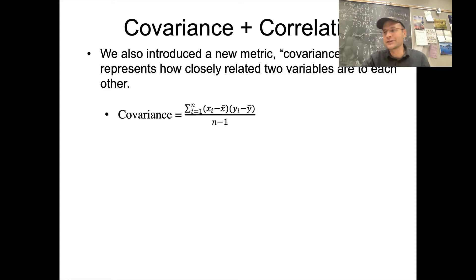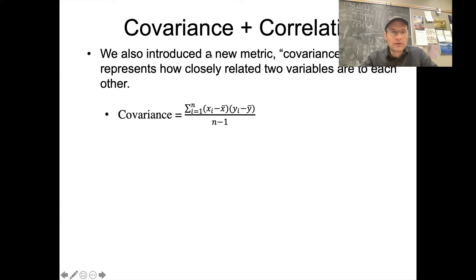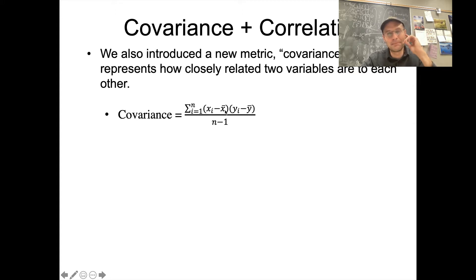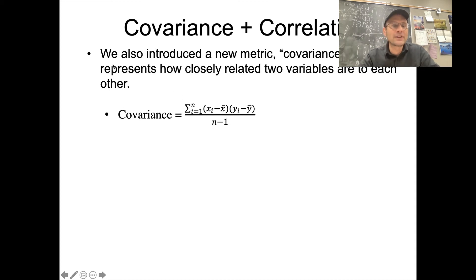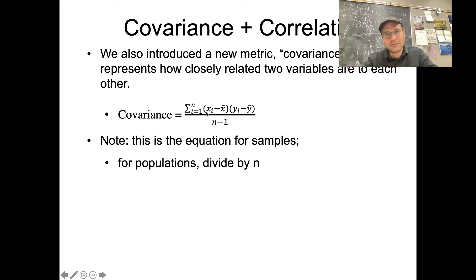We also talked about covariance and correlation. In that discussion we introduced a new metric — covariance — that represents how closely related two variables are to each other. The equation for covariance looks very similar to the equation for variance, except that for variance we have a sum of squared deviations: the individual x data points minus the mean of x, squared, summed, and divided by the degrees of freedom. For covariance, instead of squaring the deviations for one variable, we multiply the deviations for one variable by the deviations for another. This gives us directional information — if the deviation for x is positive and the deviation for y is negative, they co-vary in opposite directions.